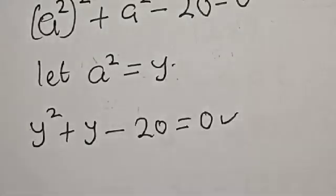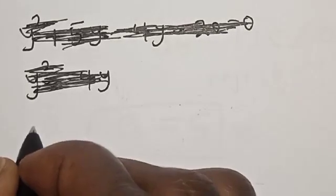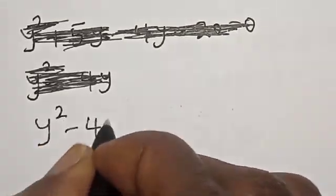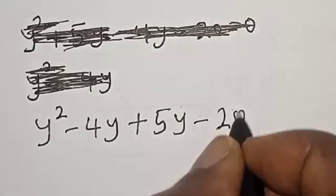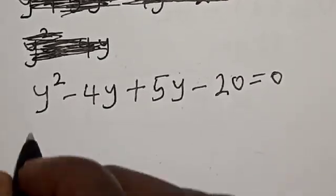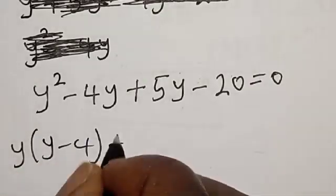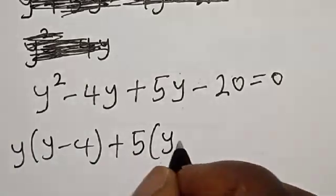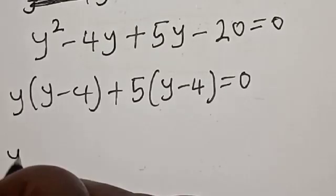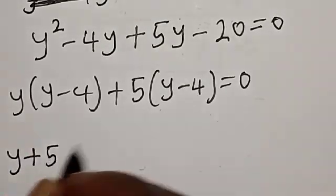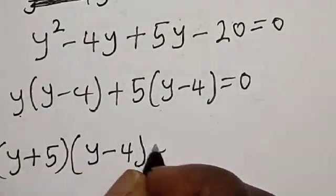This is a quadratic equation which can be solved by using the factor method. We have Y square minus 4Y plus 5Y minus 20 is equal to 0. Then Y into Y minus 4, plus 5 into Y minus 4, is equal to 0. We have Y plus 5, multiplied by Y minus 4, is equal to 0.